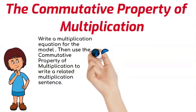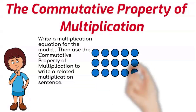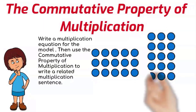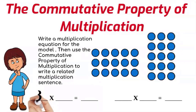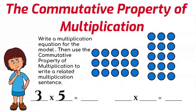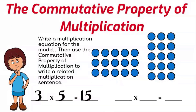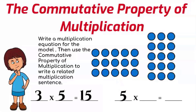Let's continue with some more arrays. Count the amount of rows you see — three rows. How many are in each row? Five. So the product is fifteen. Now the orientation has changed: the rows are five, we flip the factors so the next factor is three, and the product remains the same — that's the commutative property.